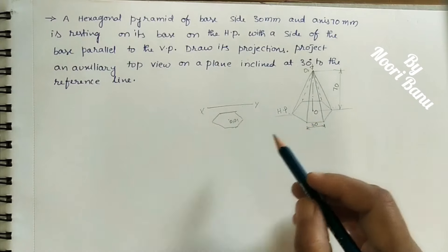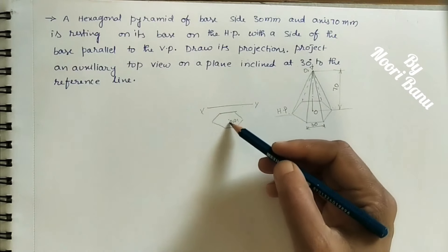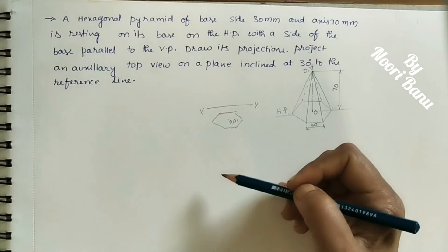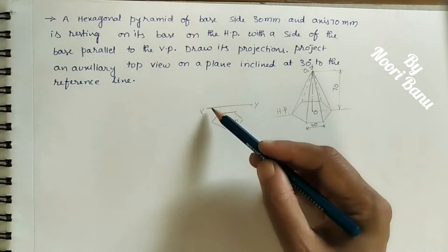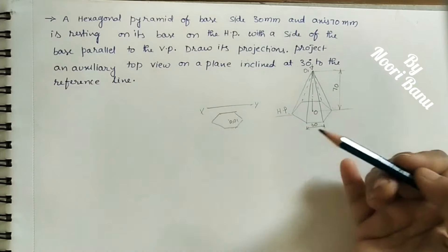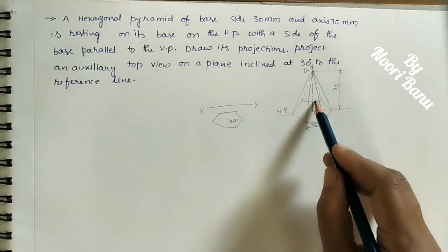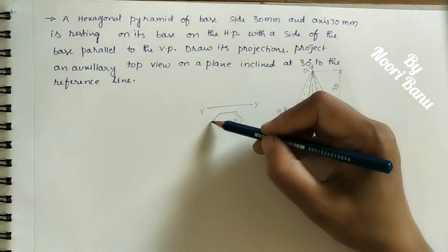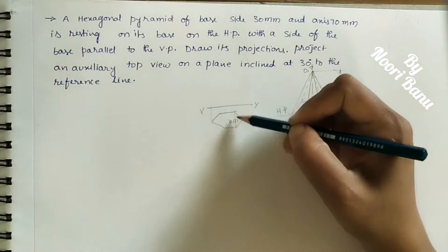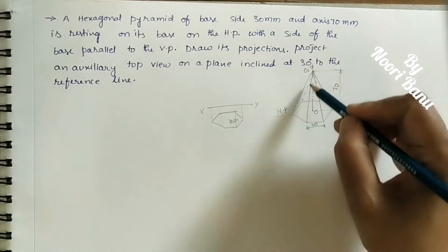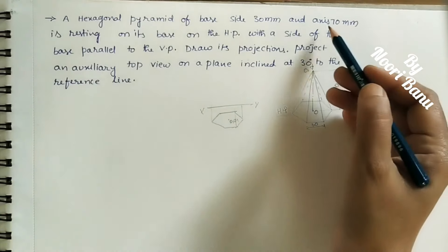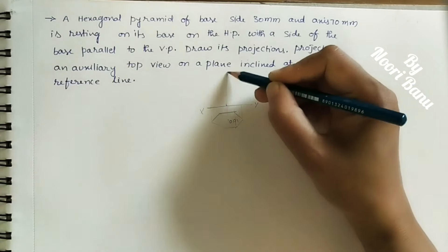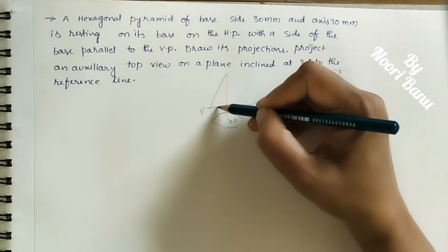Above the XY line we have to do the front view. In the front view, seeing in this direction, we can see the pyramid in the form of a triangular shape. We can see the entire height of the pyramid — how much is it? 70 mm. So above the XY line, take a 7 centimeter vertical line, and we can see the triangular faces.